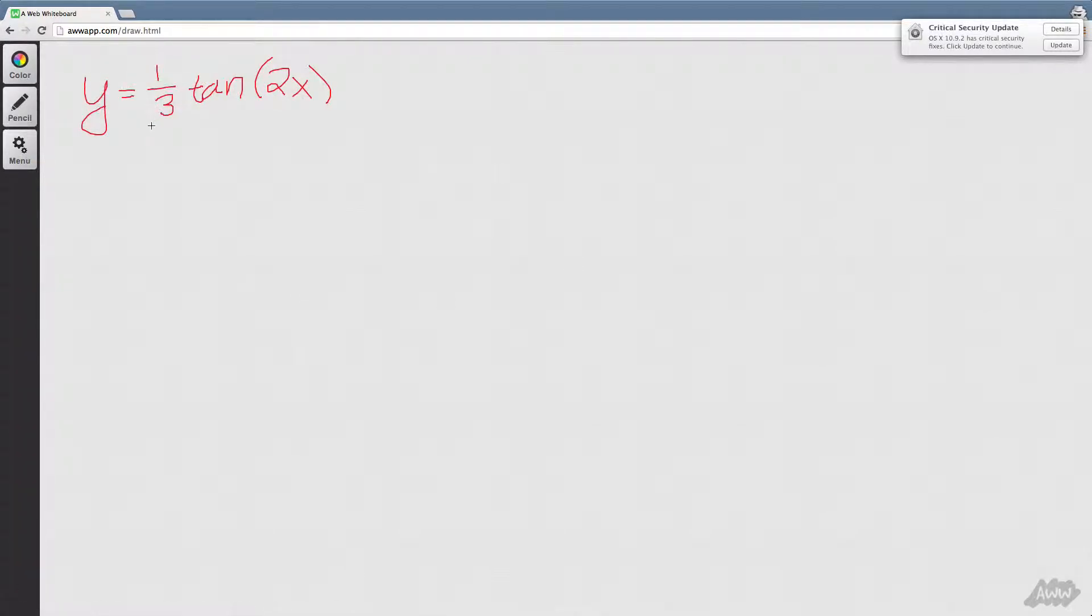So this part, this number right here is our amplitude. Typically amplitude is the absolute value of the coefficient here and we all know that the amplitude of one third equals of course one third. So that's our amplitude.